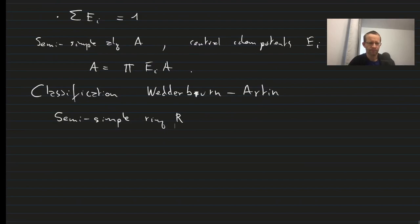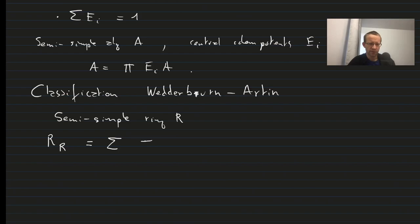Then consider it as a right module over itself. Because the ring is semi-simple, we can write this as the direct sum of simple ideals, where each simple ideal II is not equivalent to a simple ideal IJ for I different from J, and each II appears with multiplicity NI.